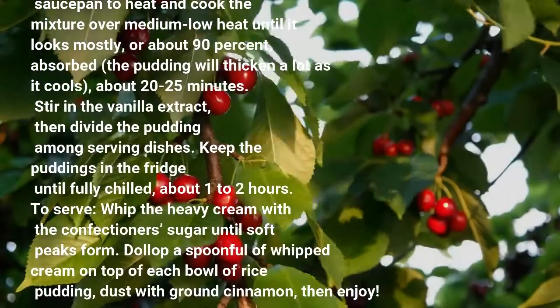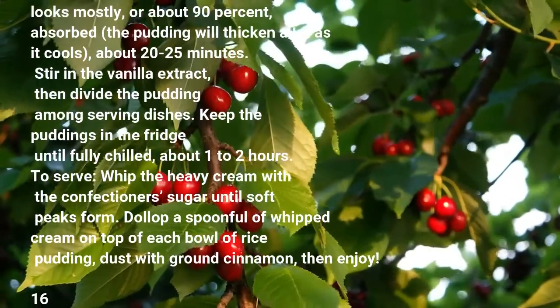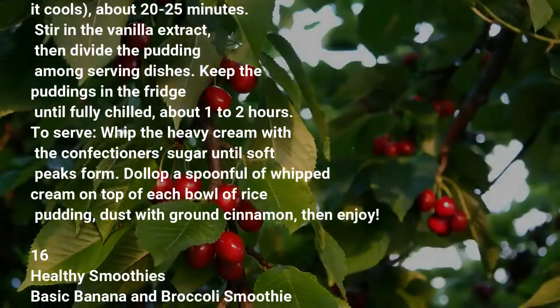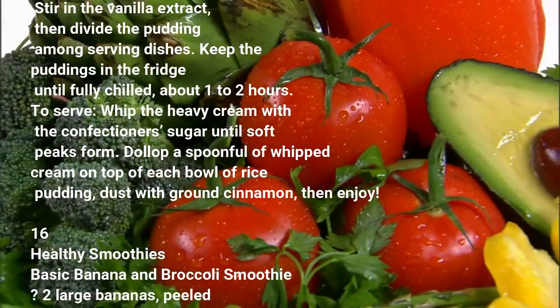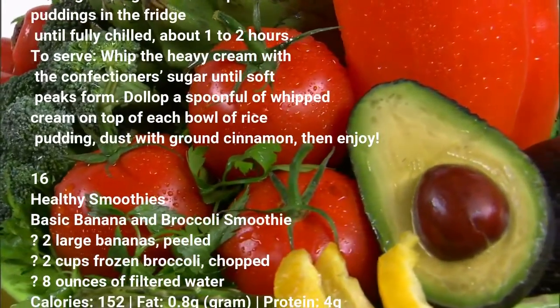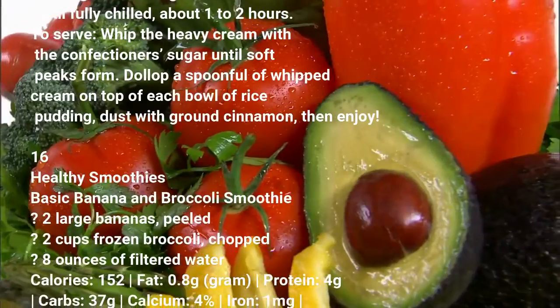Return the saucepan to heat and cook the mixture over medium-low heat until it looks mostly, or about 90%, absorbed. The pudding will thicken a lot as it cools, about 20-25 minutes. Stir in the vanilla extract, then divide the pudding among serving dishes. Keep the puddings in the fridge until fully chilled, about 1-2 hours.